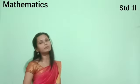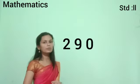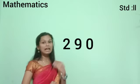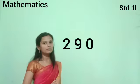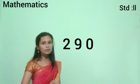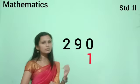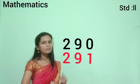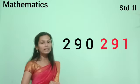Let us try one more example for after number: 290, or two hundred ninety. Which number comes after two hundred ninety? The last digit is 0, and after 0 comes 1. So 0 becomes 1, and the first two digits remain the same. So after 290 is 291, or two hundred ninety-one.